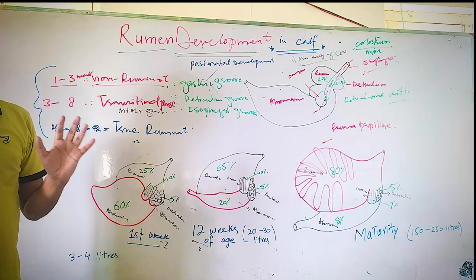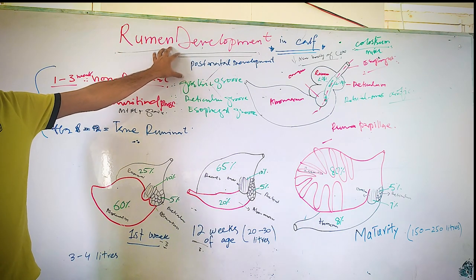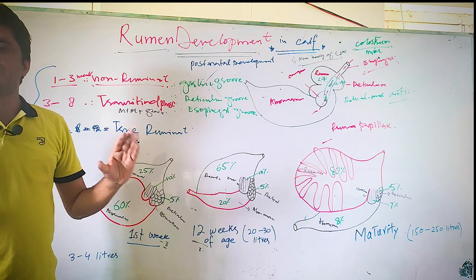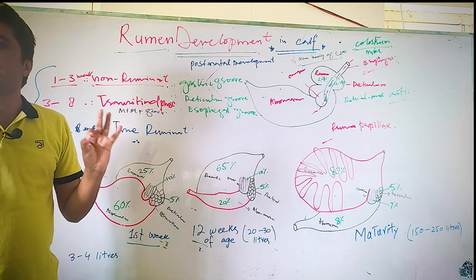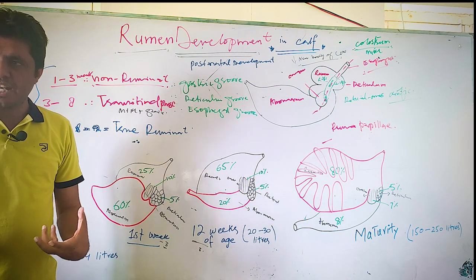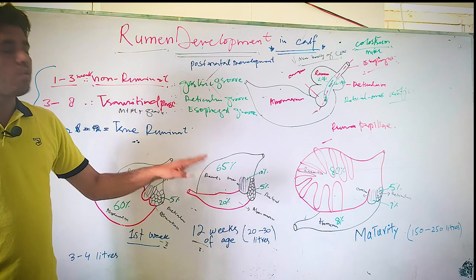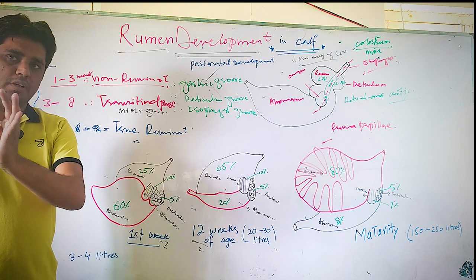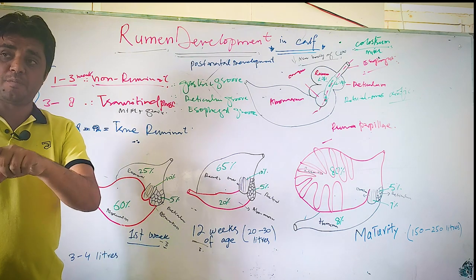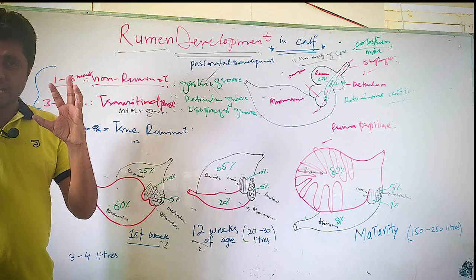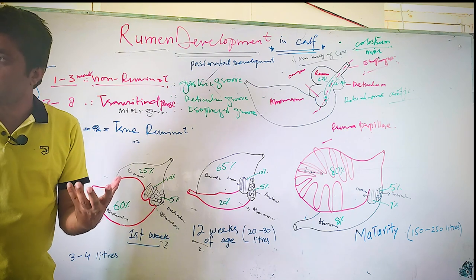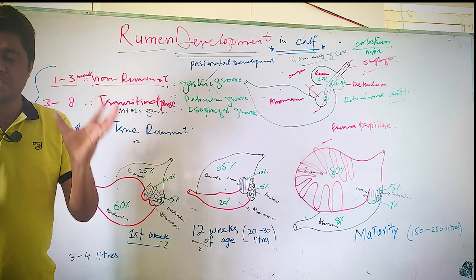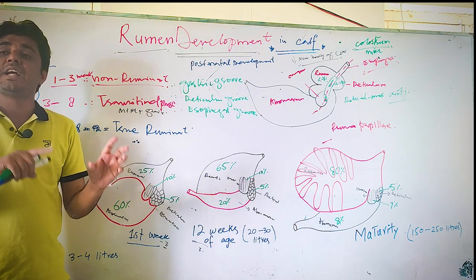Today we have discussed rumen development in calves. Rumen is one of the main parts of the ruminant or compound stomach. When a calf is born — on day one — they do not have well-developed rumen, especially they do not have well-developed rumen epithelium. That's the important point. At that time, the abomasum is active — it is the largest stomach and all stomach function is performed by the abomasum.